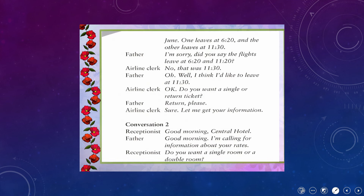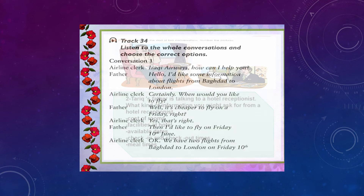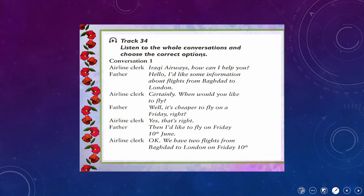Track 34: listen to the whole conversations and choose the correct options. Airline clerk and father — Iraqi Airways: 'How can I help you?' Father: 'Hello, I'd like some information about flights from Baghdad to London.'